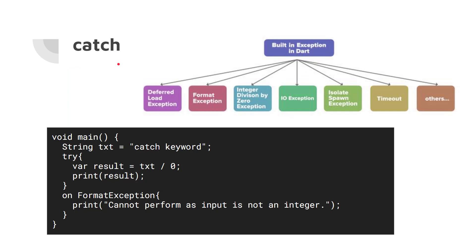The 'catch' keyword is used for error handling. When an error occurs in Dart we call them exceptions — examples include DeferredLoadException, FormatException, and divide-by-zero exceptions. When these exceptions happen your program stops; if you don't handle them your application crashes. For example, we have a string txt and we try to divide it by zero — we use 'on FormatException' and if the exception happens it prints a message.